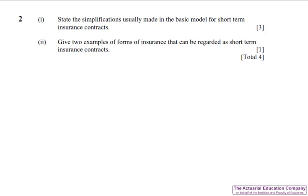Unfortunately, many students got confused and gave the bookwork from those other areas. What we're after here is the fact that we ignore interest and expenses and assume claims are settled immediately and, of course, we actually know the claims distribution. The second part gives two examples of forms of insurance, simply saying something like travel insurance or motor insurance or home insurance, which should have been no bother at all.